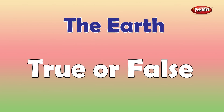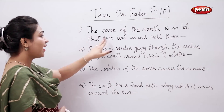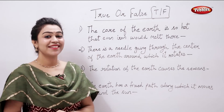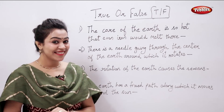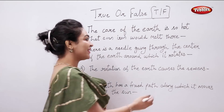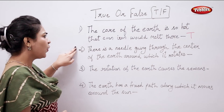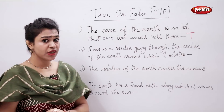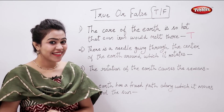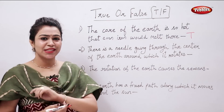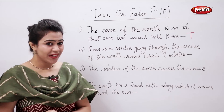True or false? The core of the earth is so hot that even iron would melt there. Is it true or false? True. There is a needle going through the center of the earth around which it rotates — is it true or false? False. There is no needle; there is an imaginary line called axis.